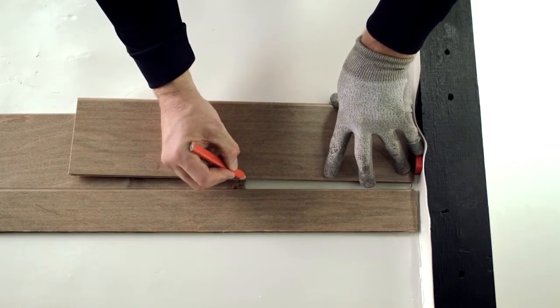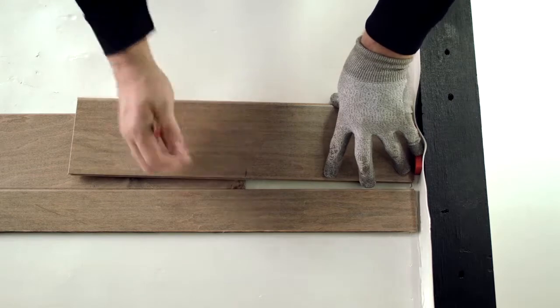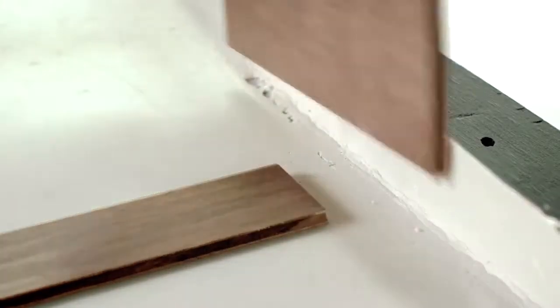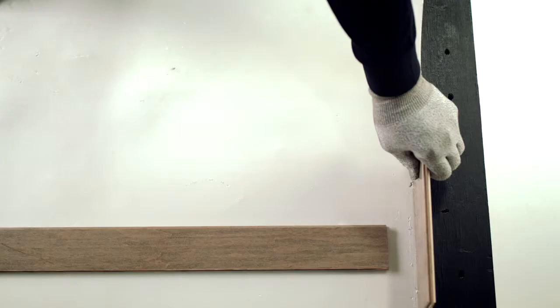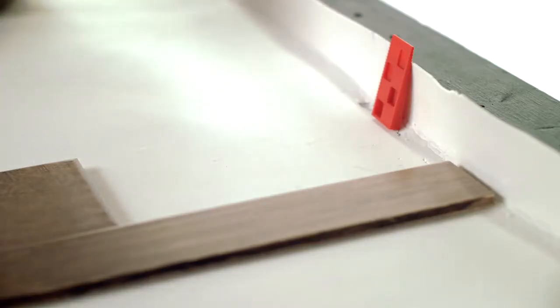Now here's something you need to understand before you make your first cut. Expansion space. You will need to maintain an expansion space of a half inch around the perimeter of the entire room, including walls, cabinets, and other obstacles. You can use spacers to help maintain consistent expansion space.